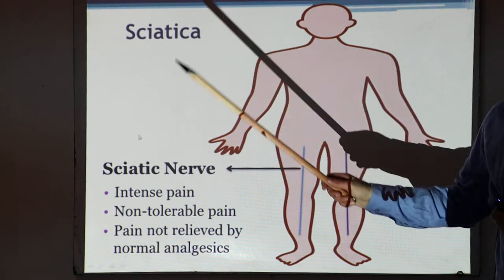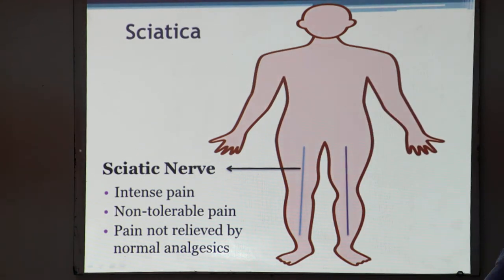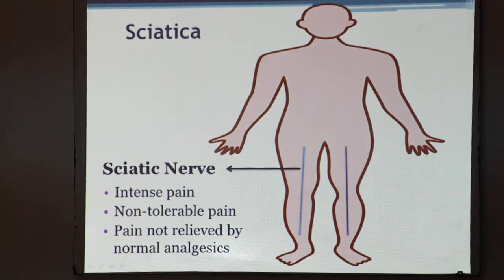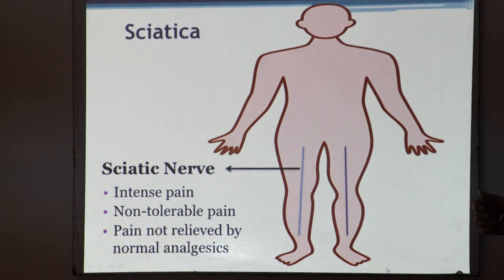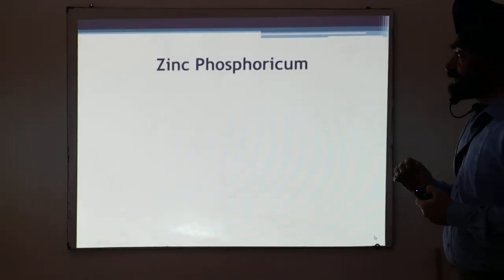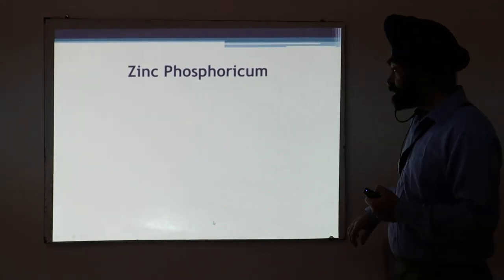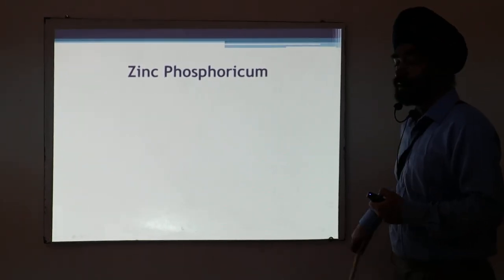When it affects the sciatic nerve, we use the term sciatica. Sciatica is a type of neuropathic pain. Posture is an important factor — prolonged sitting is one cause of sciatica. Regular exercise is important to avoid sciatica pain.